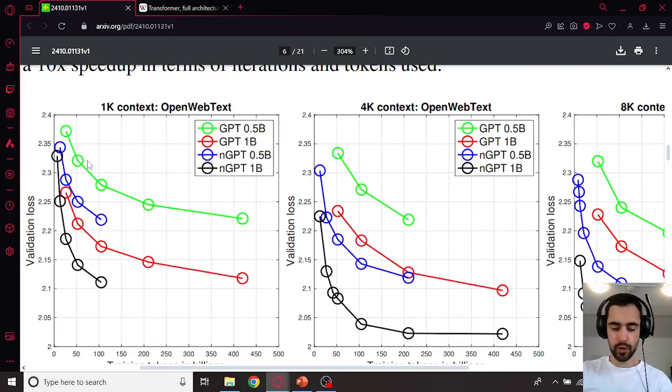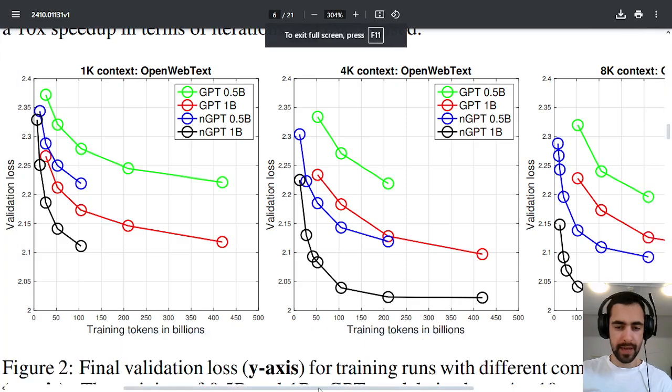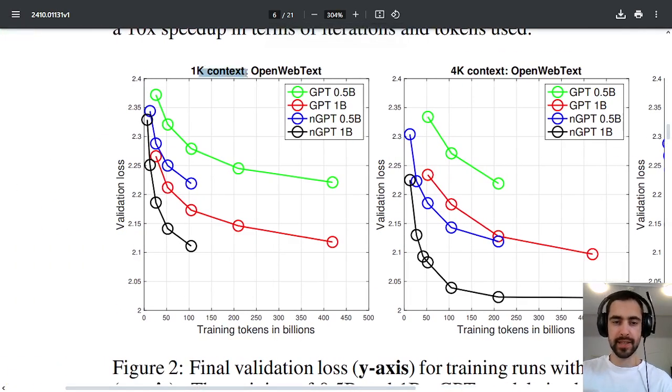This is very interesting as well. Let me zoom in. So let's look at the left one first. We have 1k context length.